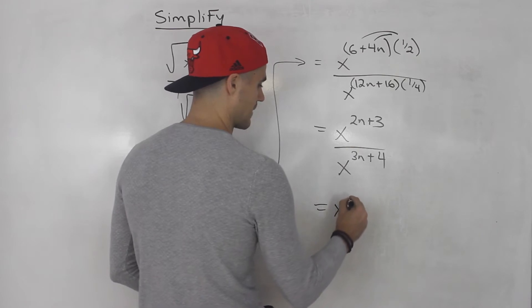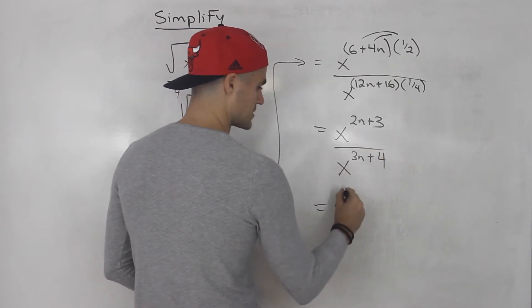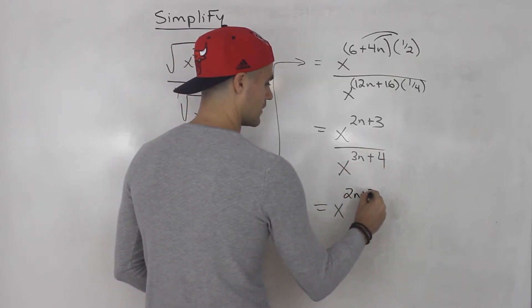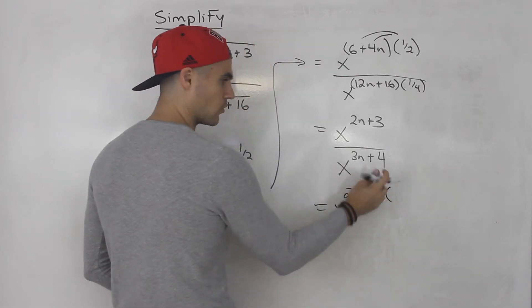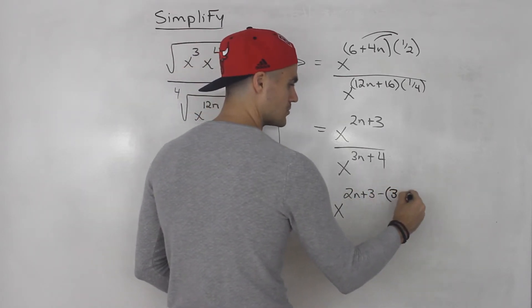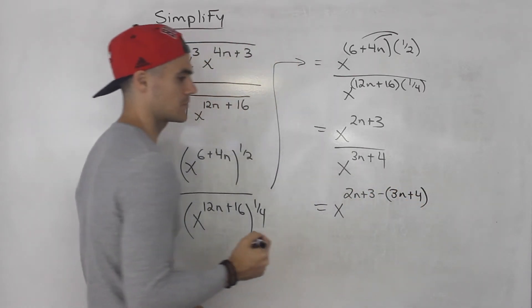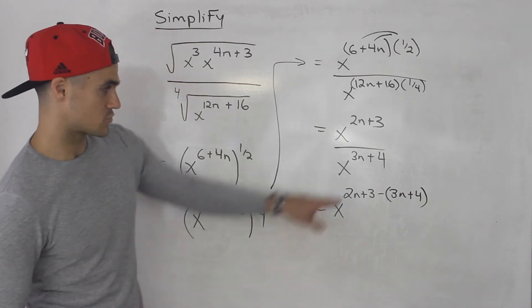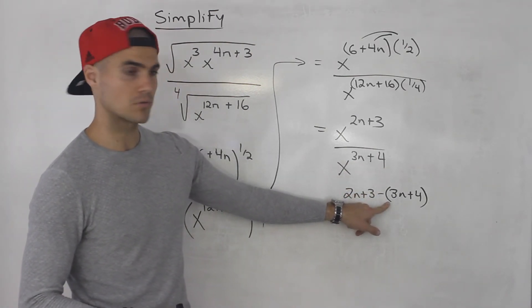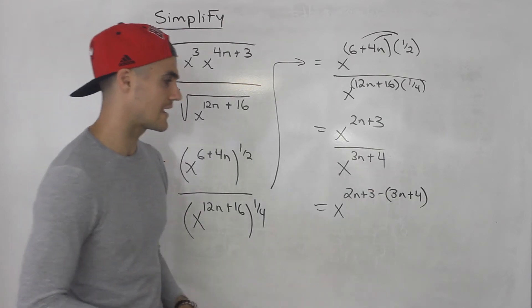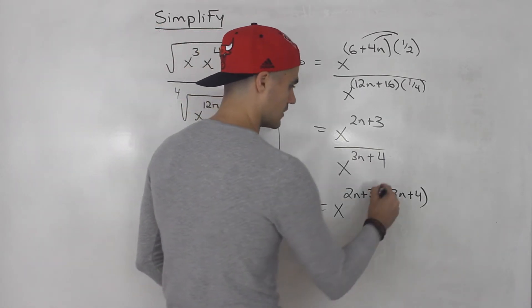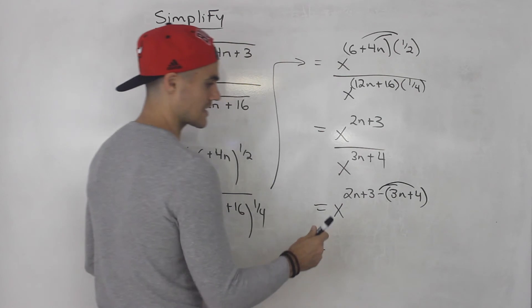So this would end up being x to the power of 2n plus 3, and then we're going to be subtracting that whole thing. So you got to make sure you put that in brackets. It's a common mistake there. You're subtracting that whole exponent, so make sure you put that exponent in brackets. Now you got to distribute that negative inside the bracket.